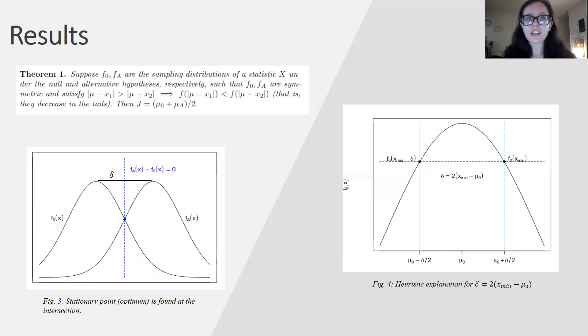Probably the most technically challenging step to my method is the one where you have to find the Youden index. To remedy this, I've proved that for any symmetric continuous unimodal sampling distribution in a test for mean shift, the Youden index is found halfway between the null and the alternative values of the mean. I won't go into much more detail on the proof, but the heuristics are available in these two graphs and the rest of the proof is in the paper.